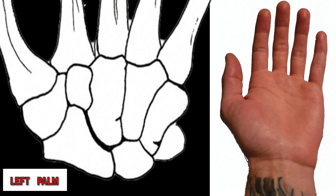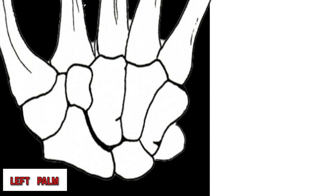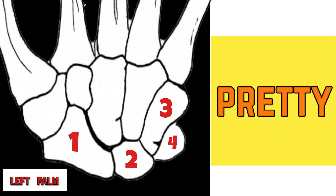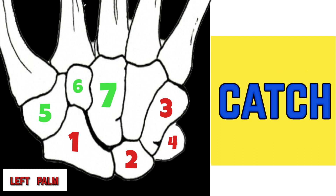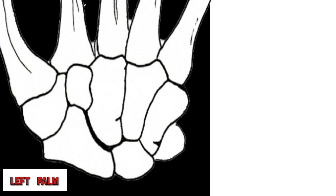This is what the order of the bones look like. 'She looks too pretty' is the first row of the mnemonic, and 'try to catch her' is the second row of the mnemonic. Say it with me this time: She looks too pretty. Try to catch her.